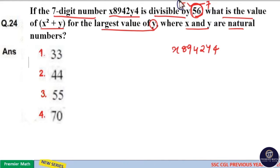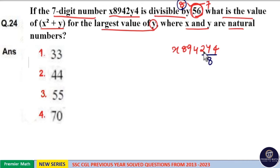Now check the divisibility rule of 8. When a number is divisible by 8, its last three digits should be divisible by 8. That is, 2y4 is divisible by 8 means y can be either 2 or 6. So 64 or 24 is possible.